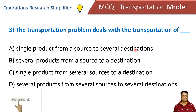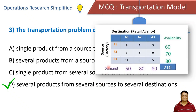The transportation problem deals with: a single product from a source to several destinations, several products from a source to a destination, a single product from several sources to a destination, or several products from several sources to several destinations. The answer is D — in a transportation problem, we consider various sources supplying products to various destinations, and there could be several products being transported.